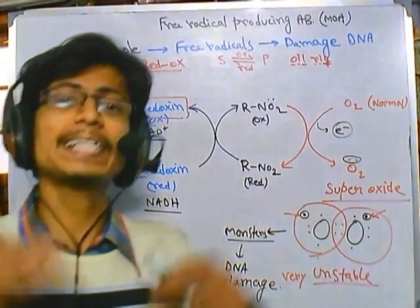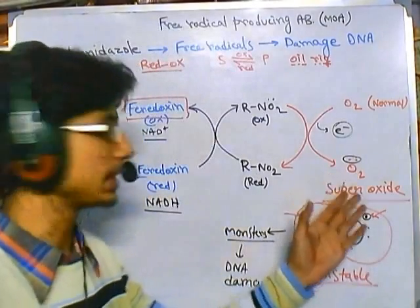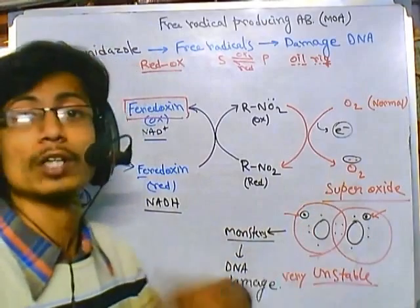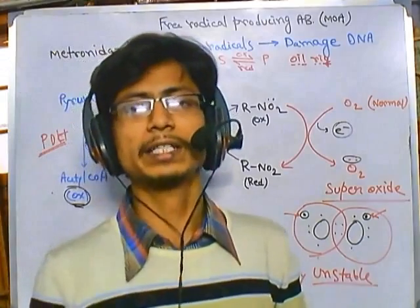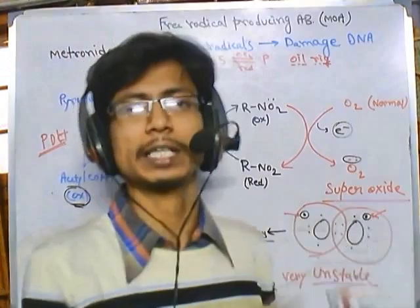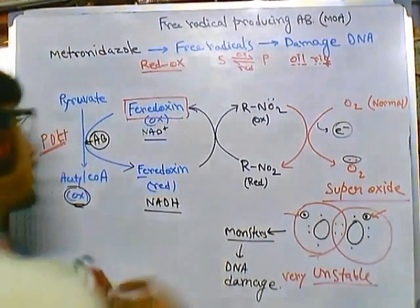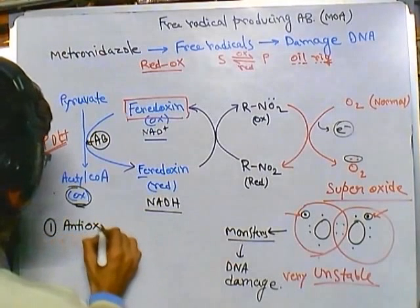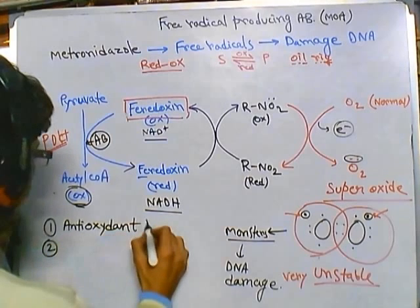These molecules are called antioxidants, because we are talking about oxidants — specifically superoxides — that cause harm through oxidation. Bacteria can also generate antioxidants inside the cell to go against this kind of oxidative damage. So the first resistance mechanism is antioxidant production.